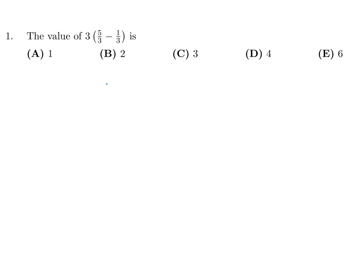The value of 3, 5 minus 1 over 3. And then that 5 minus 1 is 4, the 3's cancel, and all you're left with is 4. So the answer is D.